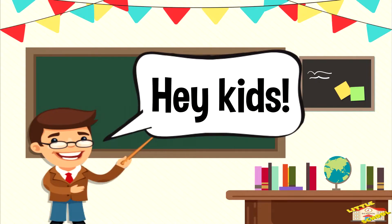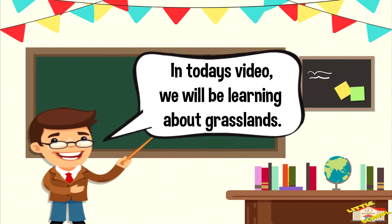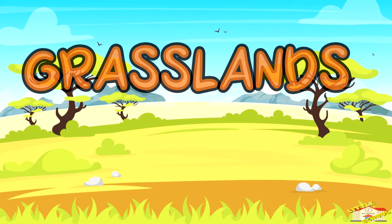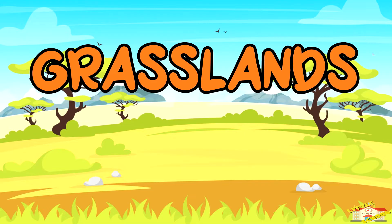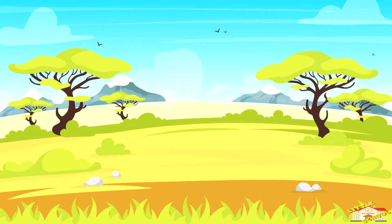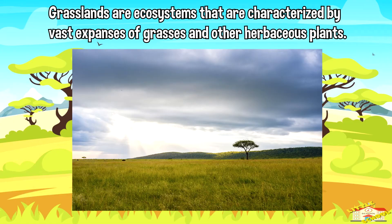Hey kids, in today's video we'll be learning about grasslands. Are you ready? Let's begin. Grasslands are ecosystems that are characterized by vast expanses of grasses and other herbaceous plants with few or no trees.